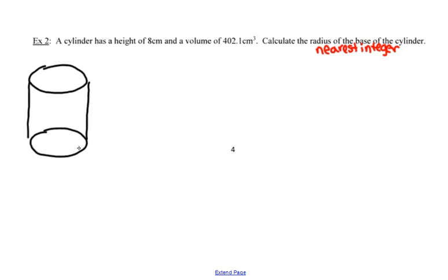The height of this cylinder, or the distance between those two circular bases, is 8 centimeters. They tell us that the volume is 402.1 cubic centimeters, and they want us to calculate the radius. So I'm going to call the radius x by identifying it as such in my picture.